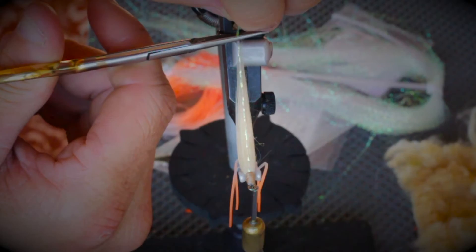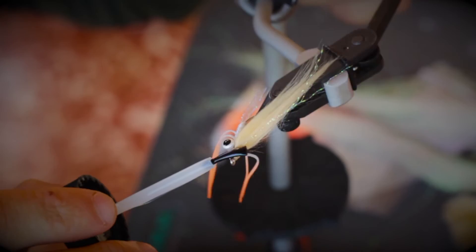After that we're going to build up the head, reach for a Loon hard head cement, and go ahead and apply some right on the head of the fly. Well there you have it folks, real simple fly. We're going to be doing these with bead chain and lead eyes and we're going to have a bunch of them, that's for sure.